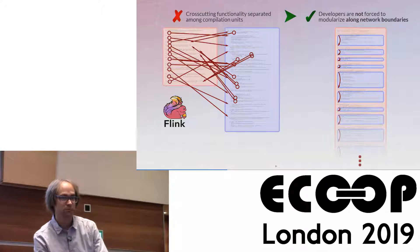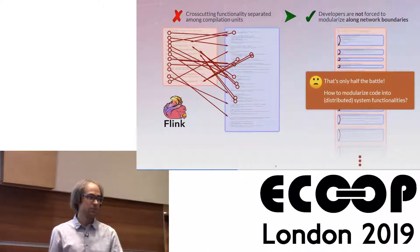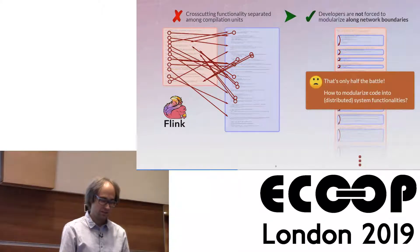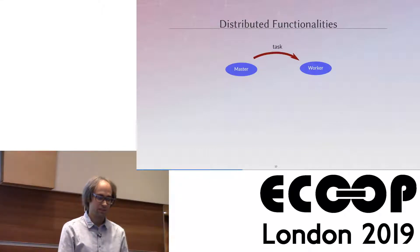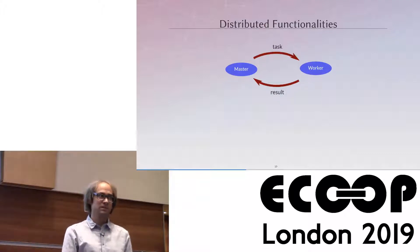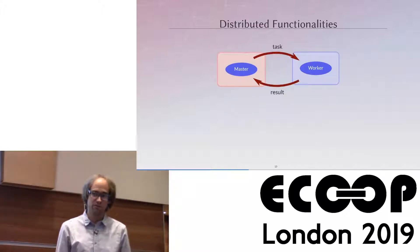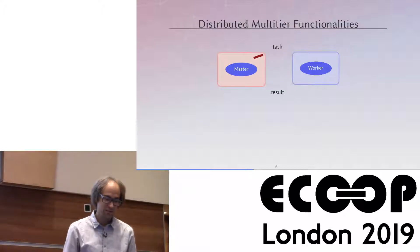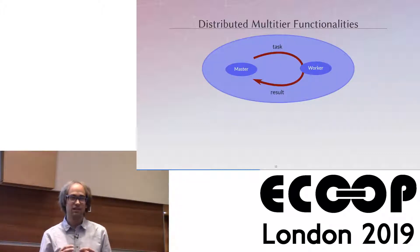We're no longer forced to modularize along network boundaries, so we can implement communication in a more straightforward way. But now it's not clear how to modularize such multi-tier code properly. Ideally we'd like to encapsulate different system functionalities into different modules. Imagine a master that dispatches tasks to workers and workers provide results back. Traditionally you'd develop separate modules for the master and worker. But dispatching tasks and retrieving results conceptually belongs to the same functionality — it's a single data flow from master to worker and back — and we want to encapsulate such distributed functionalities inside a single multi-tier module.